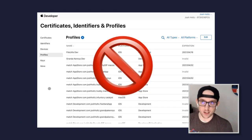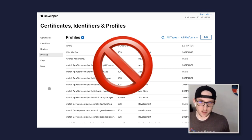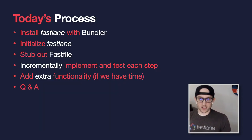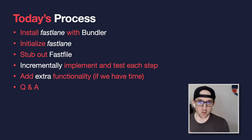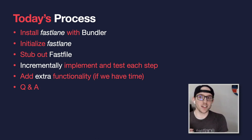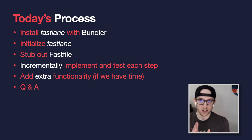We are not going to touch the developer portal at all. We may go look at it as proof that something is there, but we're not going to edit things unless things go horribly wrong. Today's process: we're going to install Fastlane using Bundler, initialize Fastlane, get our Fastfile created, stub out the Fastfile with the lanes we're going to use for both iOS and macOS, and then incrementally implement and test each step.